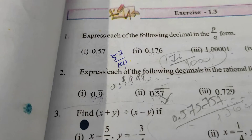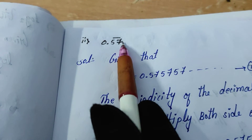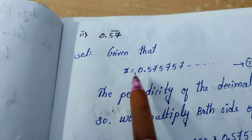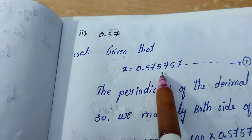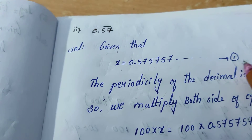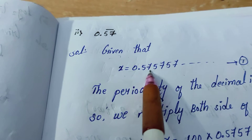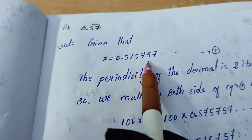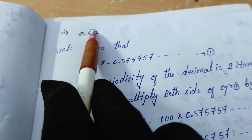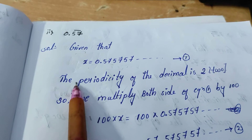Let's see how we can do it. Our question is 0.57 bar. Given that, let x equal to 0.5757 and so on — because the bar means it is a repeated number, we are rewriting it as x equals 0.5757 up to so on. This is equation 1.